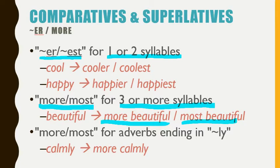More and most need to be used if you have an adverb ending in LY, even if it's a short word. So calmly is only two syllables, but we are not going to say comlier or comliest — we're going to say more calmly. Whereas with the word friendly, you do say friendlier or friendliest, because friendly is not an adverb, it's actually an adjective — a friendly person, friendlier person, friendliest person.